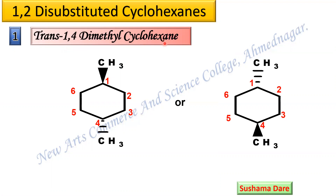So trans-1,4-dimethylcyclohexane — as I have already explained, first always go for the planar structure. After drawing the planar ring, then you number it 1, 2, 3, 4, 5, 6, and then select position 1 and 4. Then look at the geometry — it is trans-geometry, that means one is a wedge bond and another is the dotted bond. So the possibility at the first position is a wedge methyl group and at the 4th position it is a dotted methyl group. The other possibility can be the reverse.